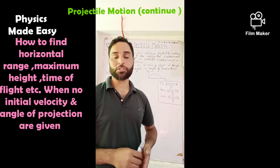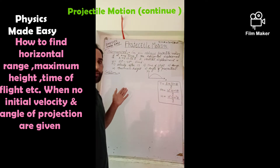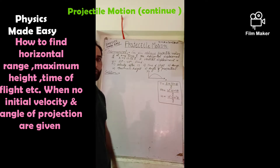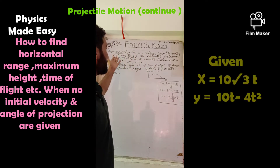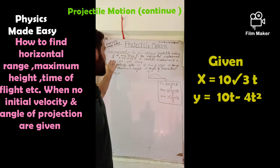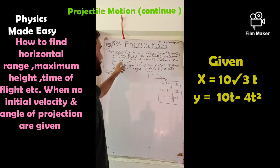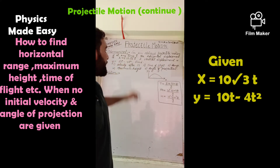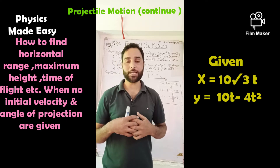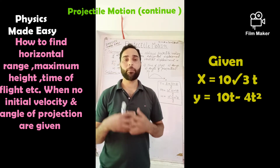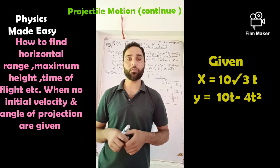Let's solve a numerical on projectile motion. We are given that at any time t, the horizontal displacement is x = 10√3·t and vertical displacement is y = 10t - 4t². We are asked to find the velocity of the particle after one second, time of flight, range, maximum height, and angle of projection.